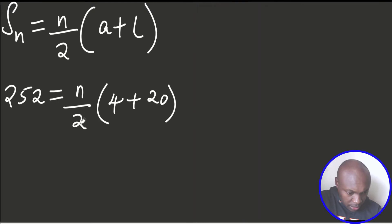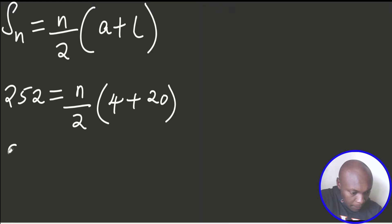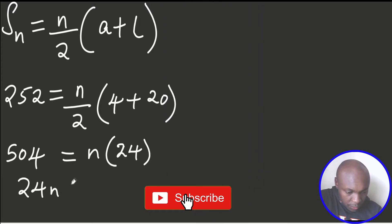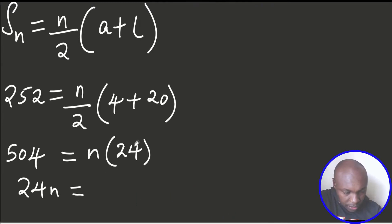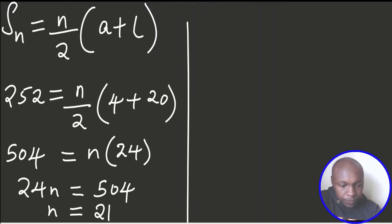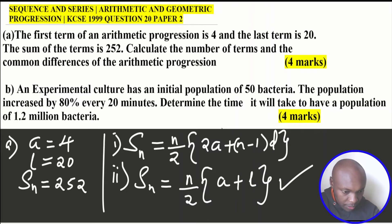Multiplying both sides by 2: 252 × 2 = 504, and (4 + 20) = 24. So 504 = 24n. Dividing both sides by 24, we get n = 21. Therefore the number of terms is 21. Now we need to find the common difference.